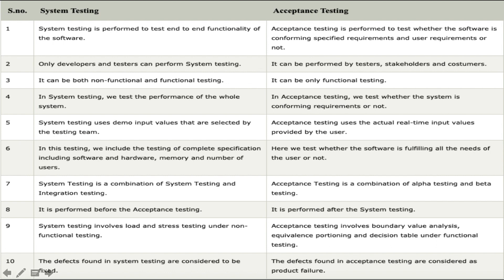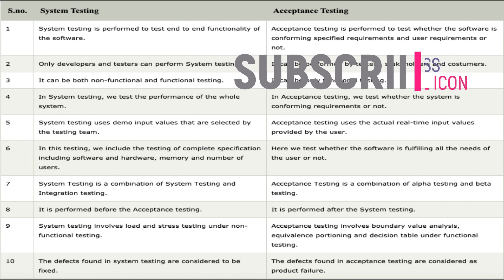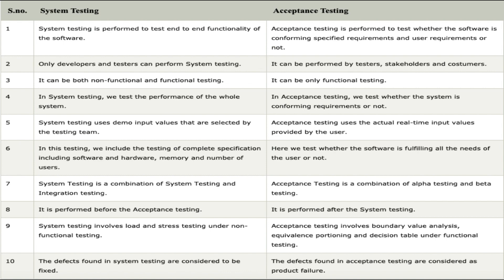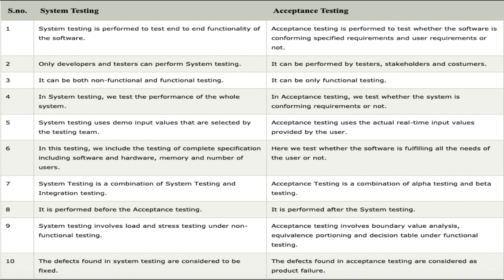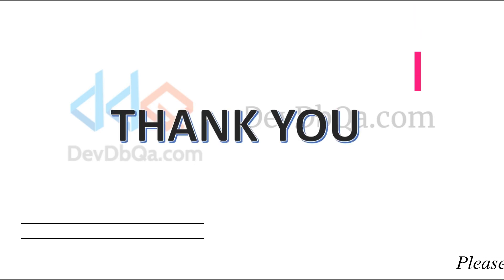Point eight: system testing is performed before acceptance testing, and acceptance testing is performed after system testing. Point nine: system testing involves load testing and stress testing under non-functional testing, whereas acceptance testing involves boundary value analysis, equivalence partitioning, and decision table under functional testing. Point ten: defects found in system testing are considered fixable, whereas defects found in acceptance testing are considered a product failure, since the software has already passed through unit testing, integration testing, and system testing.